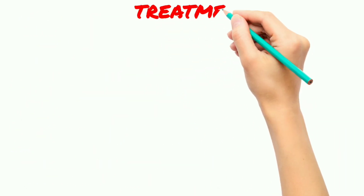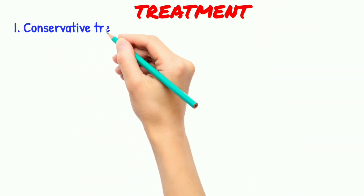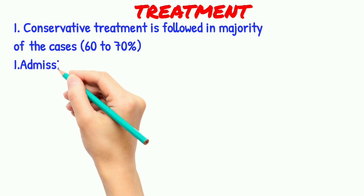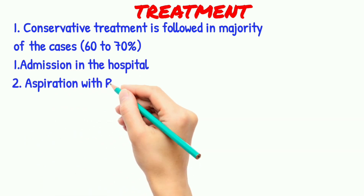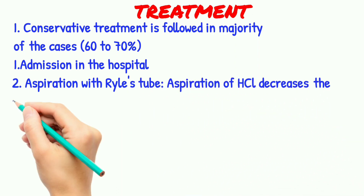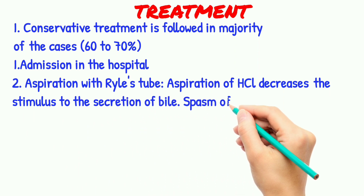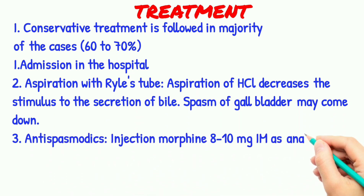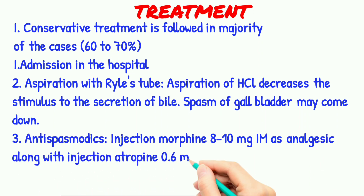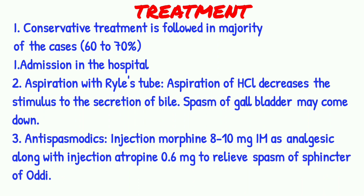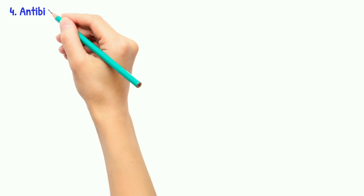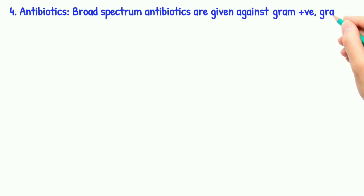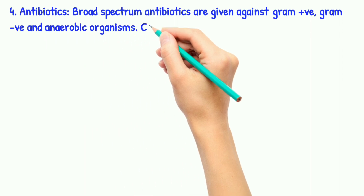Treatment: conservative treatment is used in 60 to 70% of cases, followed by cholecystectomy. The steps include admission to hospital, aspiration with a Ryle's tube to reduce the stimulus to bile secretion and gallbladder spasm, antispasmodic injection morphine 8 to 10 mg IM as analgesic along with injection atropine 0.6 mg to relieve spasm of the sphincter of Oddi. Broad-spectrum antibiotics are given against gram-positive, gram-negative, and aerobic organisms.